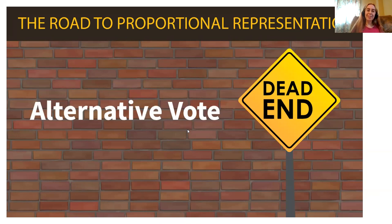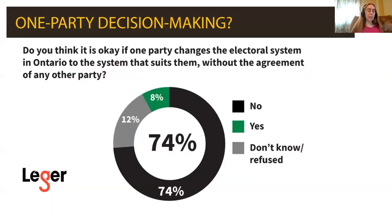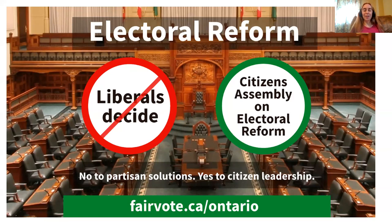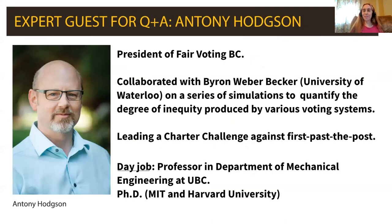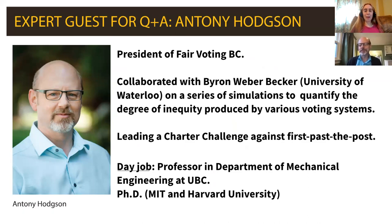Fair Vote Canada looks at what the Liberals are doing in Ontario as a trial balloon for all other levels, particularly the federal level — something we need to push back against. A recent poll found that people in Ontario aren't a fan of one party ramming through their preferred voting system. We are calling for a Citizens' Assembly on electoral reform. Thank you everyone for your patience in sitting through that.